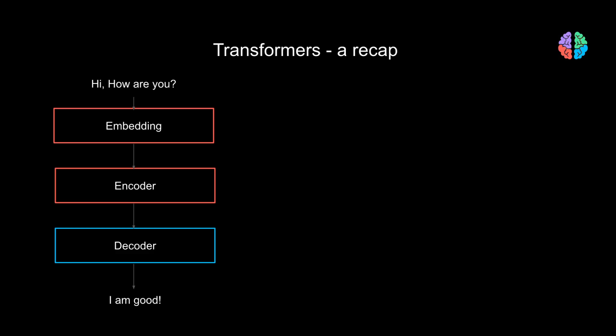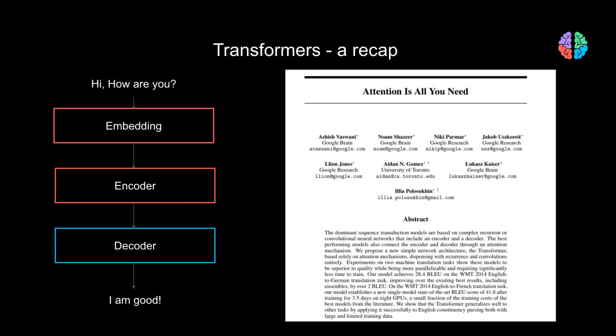Let's have a quick recap of transformers. The transformer was first proposed in the 'Attention Is All You Need' paper, and it is composed of an embedding layer, an encoder, and a decoder. At a high level, the embedding layer first embeds each word into fixed-size vectors. These vectors are then passed through the encoder, which gives an abstract continuous representation. The decoder then converts this abstract representation into meaningful outputs.